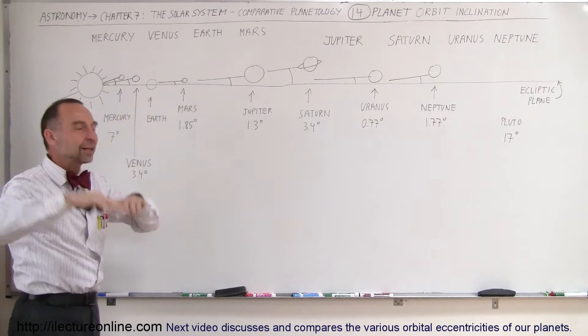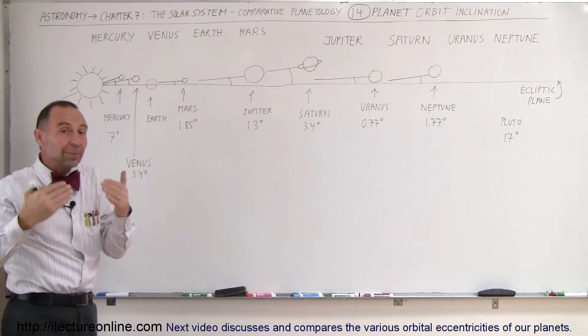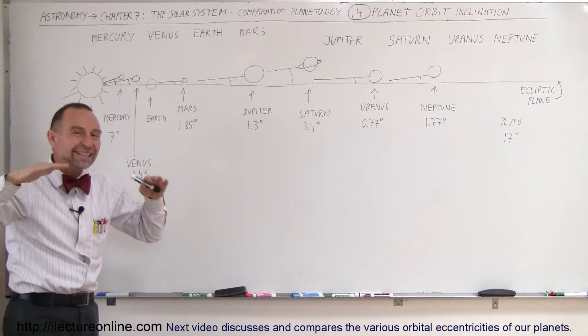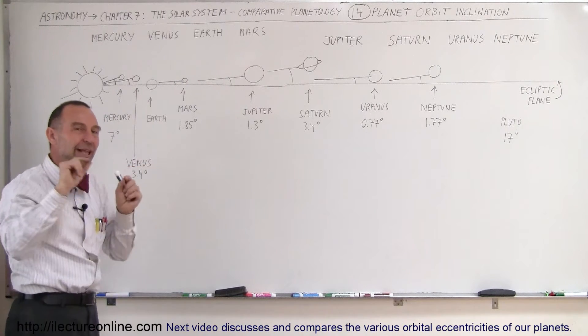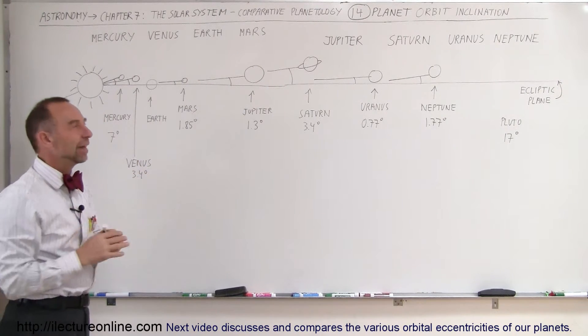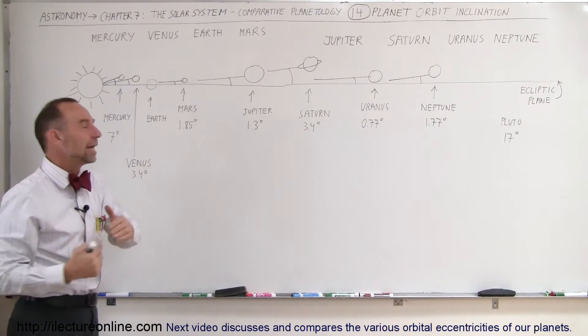So that plane is called the ecliptic plane. Now it turns out all the other planets, they revolve around the Sun roughly in the same plane, but not quite, slightly off. And so that's what we call the orbit tilt or the orbit inclination.